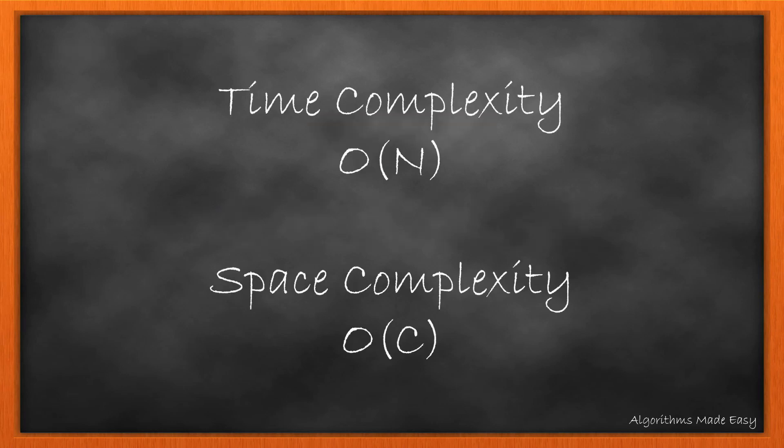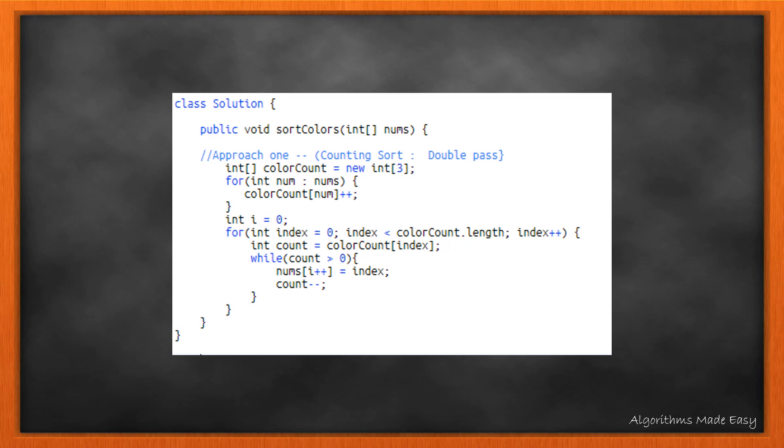The time complexity for this algorithm is O(n) while the space complexity is O(c) where c are the distinct colors. Here's the actual code snippet from the method.